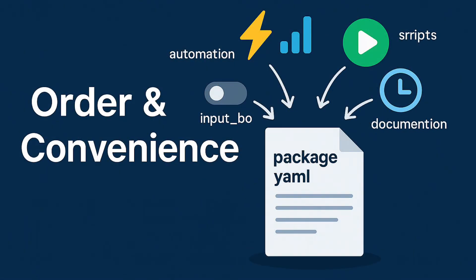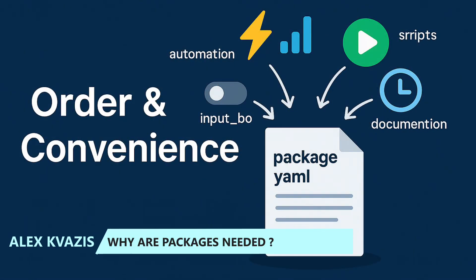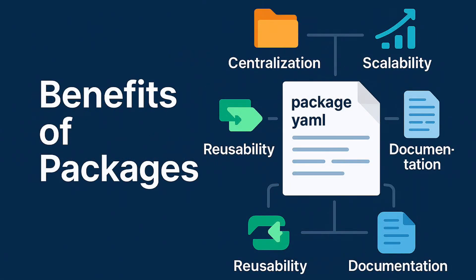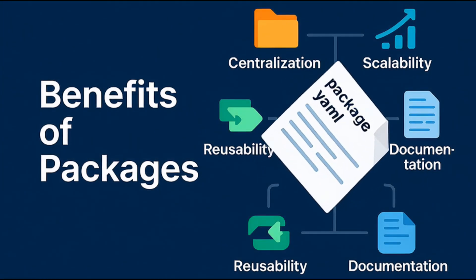Now let's figure out why we should use packages at all. The main idea is order and convenience. When we have dozens of automations, scripts, and sensors, it's very easy to get lost. Packages allow you to collect everything related to a specific solution in one file. The first advantage is centralization — the entire project is stored in one place. You don't need to search for automations in one section, scripts in another, and helper variables somewhere else. Everything lies together.